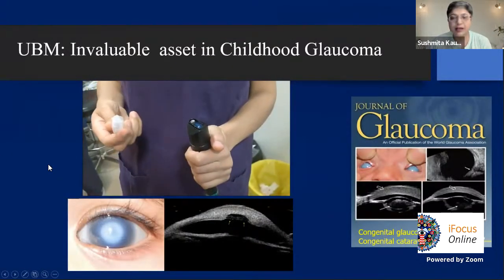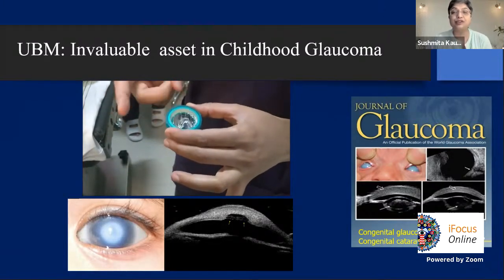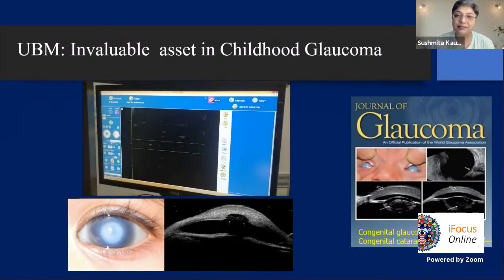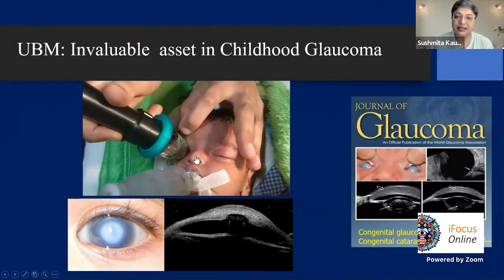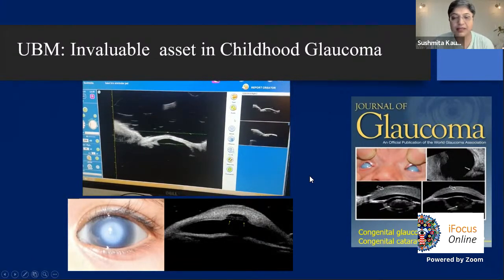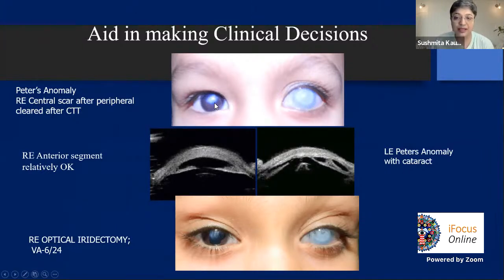UBM has really changed how we look at childhood glaucoma. Having a dedicated 50 MHz UBM (Quantel) in the operating theatre for babies has been invaluable — it has a soft sleeve that molds to any palpebral aperture. UBM aids clinical decisions enormously: in Peters anomaly in both eyes, it shows which eye has an early cataract with iris involvement (don't touch yet) versus one needing only an optical iridectomy. That child is now going to school with 6/24 vision.